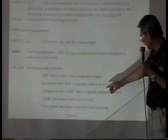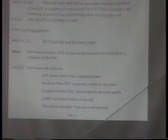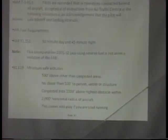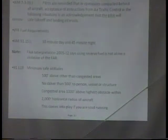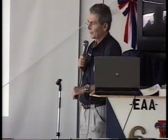The reason we're getting into minimum safe altitudes is that I see situations where pilots create an emergency by scud running. Remember: it's 500 feet above other than congested areas, no closer than 500 feet to a person, vessel, or structure. In a congested area, it's 1,000 feet above the highest obstacle within a 2,000-foot horizontal radius. This comes into play if you're scud running — you keep inching down and you're supposed to be 500 feet below the clouds. So think about that if you're trying to make it VFR with an overcast.